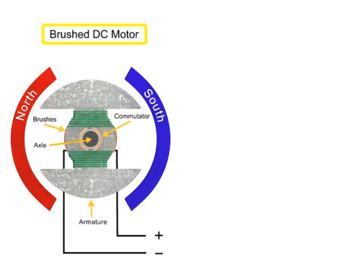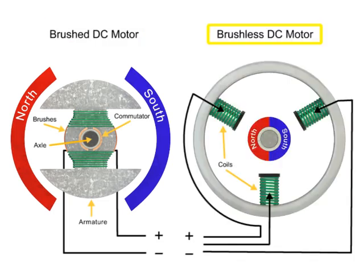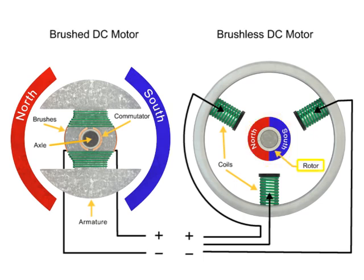Unlike DC brush motors, DC brushless motors do not utilize brushes to control current. Permanent magnets bonded directly to the rotor of the brushless DC motor create rotational motion as current passes through the stator.